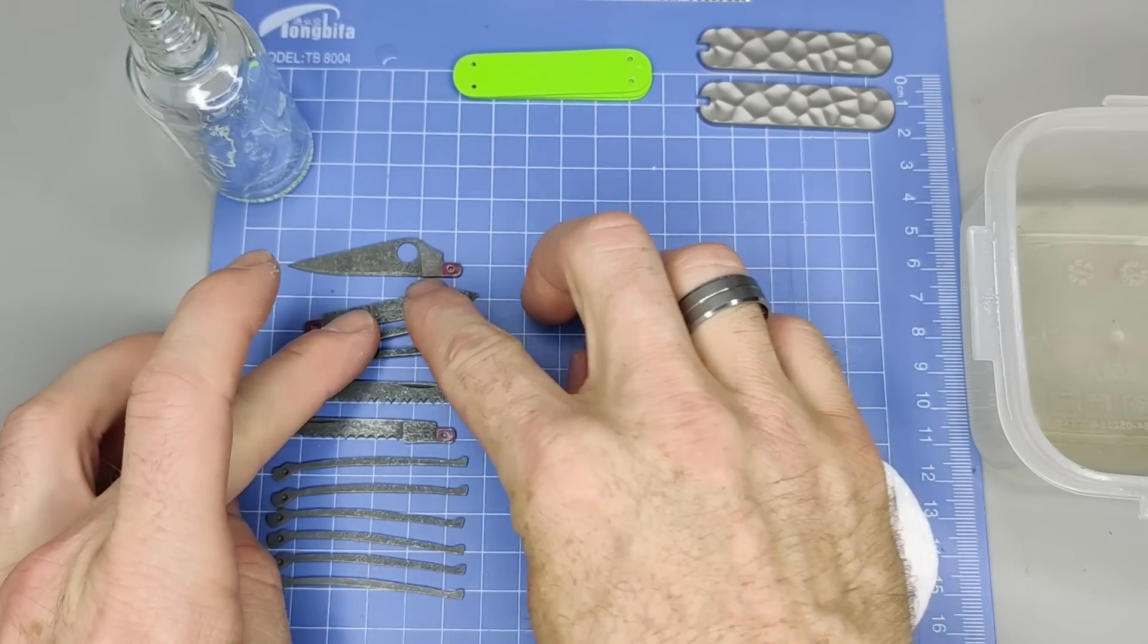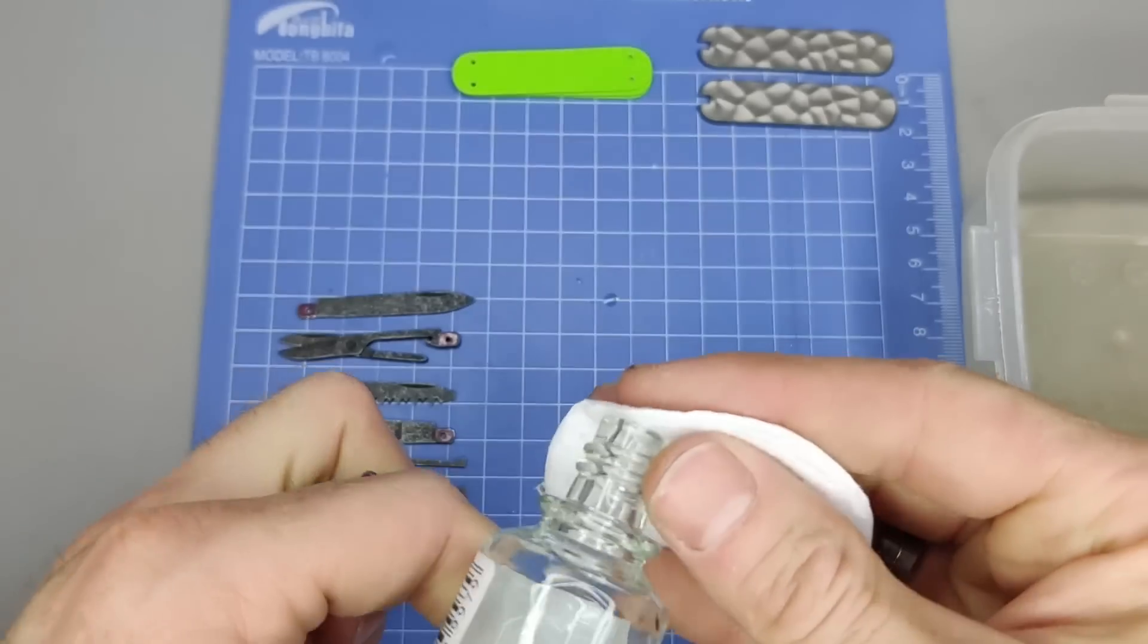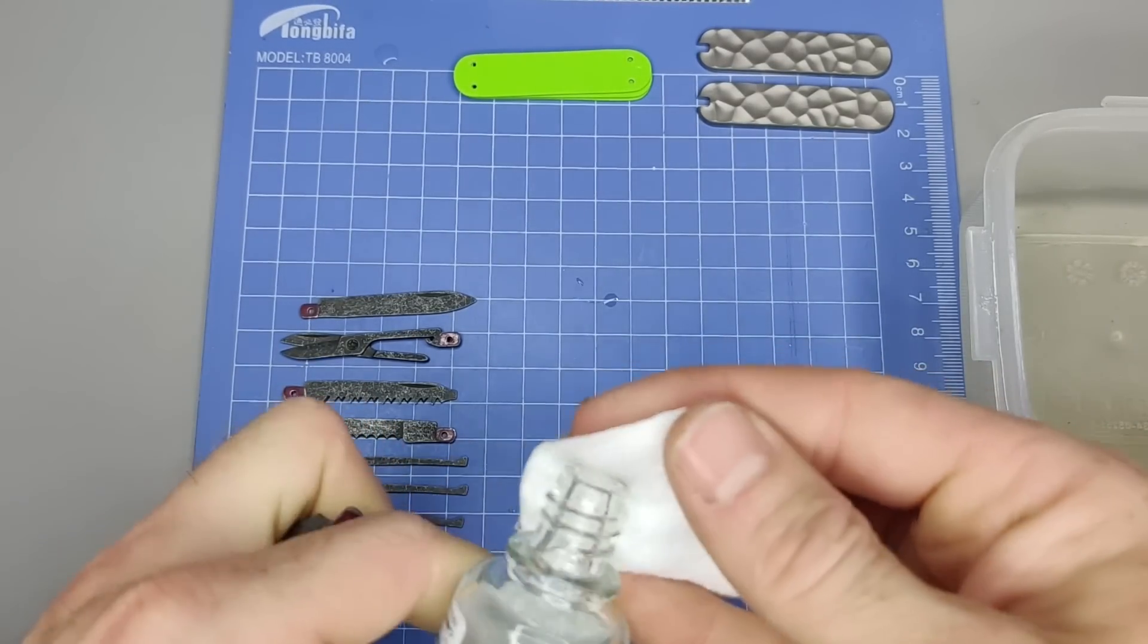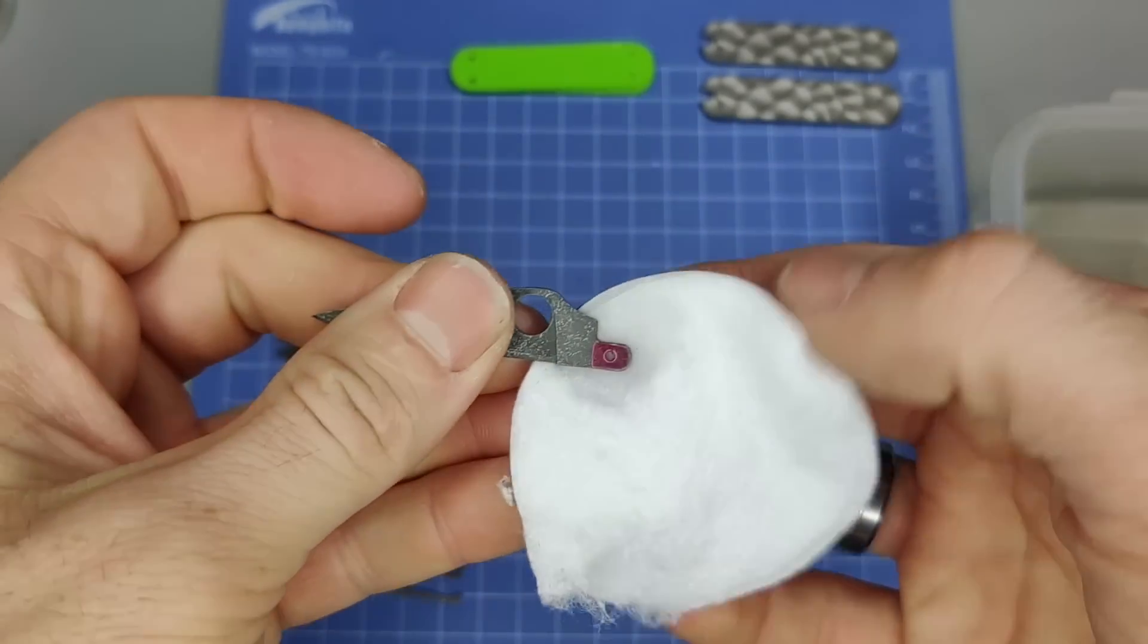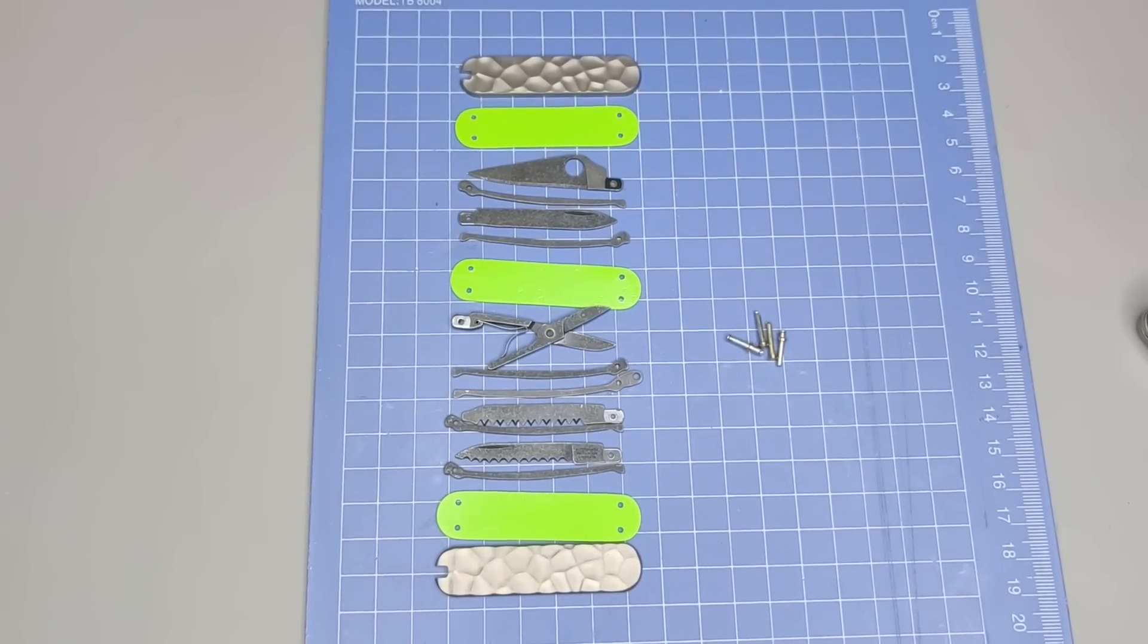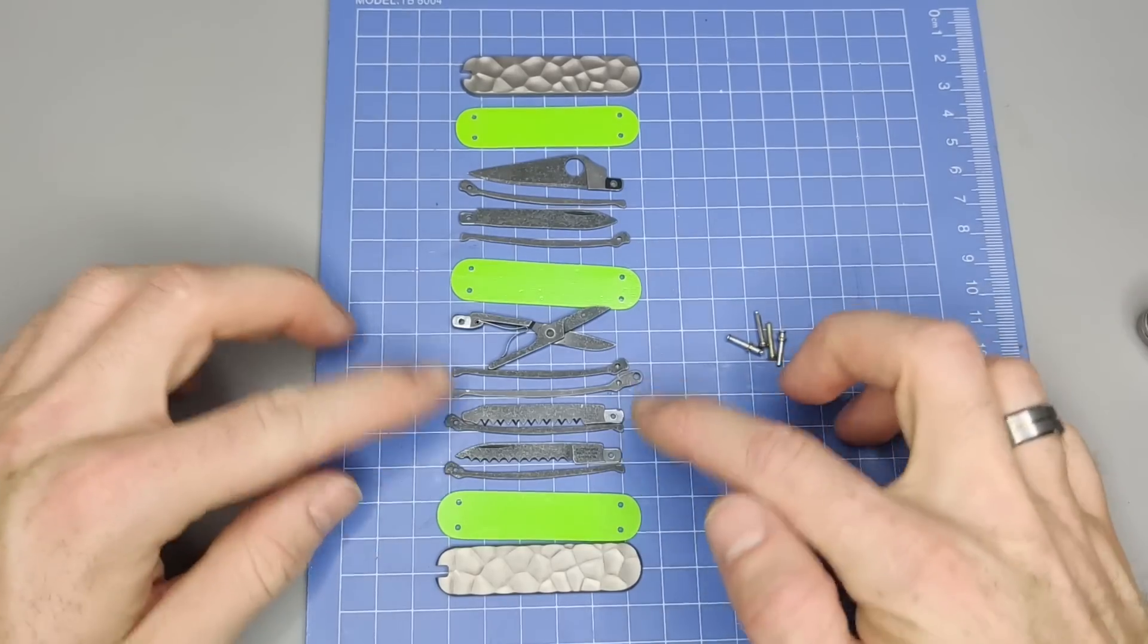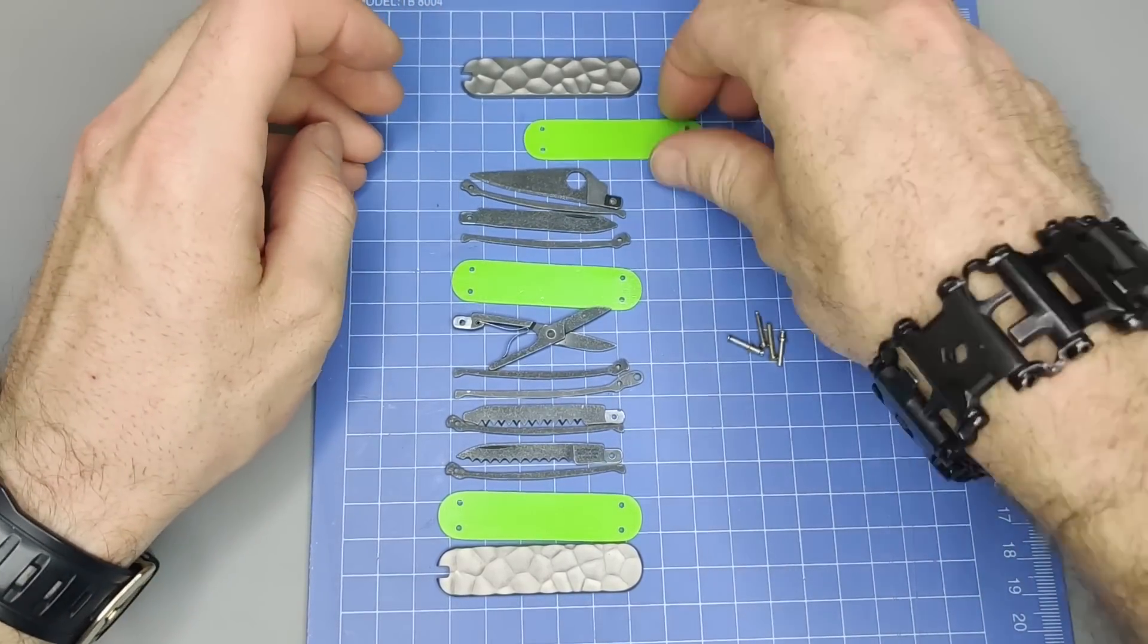Alright, next step we're going to do is take and wash off now the fingernail polish because it's no longer needed. Alright, so I finished up cleaning up the fingernail polish. I've oiled them up and so we can begin assembly now.